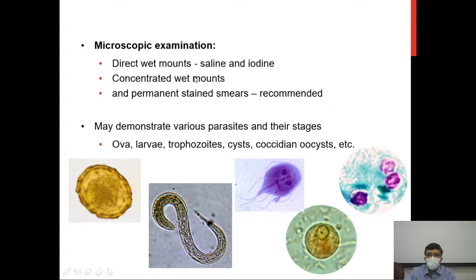Microscopic examination can be done using direct wet mounts — a saline mount and an iodine mount — or after applying a concentration method to the stool, and lastly using permanent stained smears which is the recommended method in most places. Microscopic examination may demonstrate various parasites and their stages, including ova, larvae, trophozoites, cysts, and coccidian oocysts.